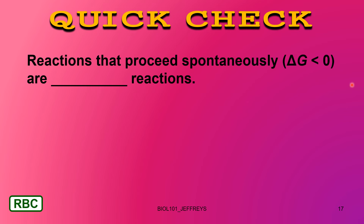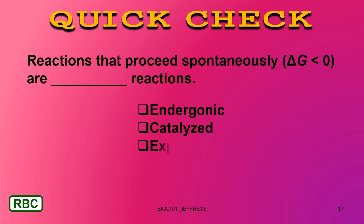Here's a quick check: reactions that proceed spontaneously, where delta G is less than zero — those are what kind of reactions? Your choices are endergonic, catalyzed reactions, explosive reactions, or exergonic reactions. They proceed spontaneously, we do not have to add energy to the system, and as the reaction proceeds, energy is released — that's obviously the exergonic scenario.